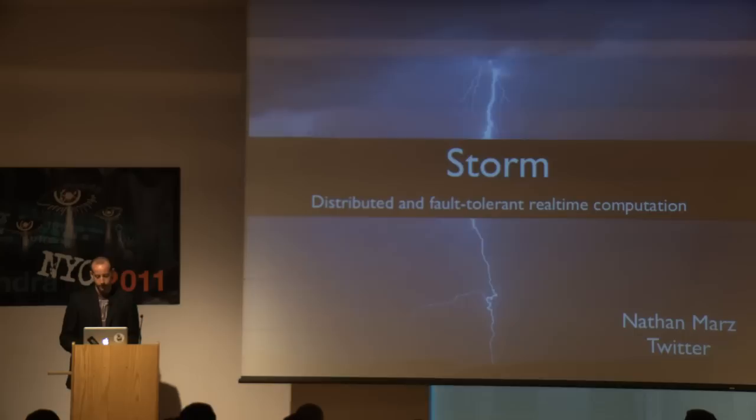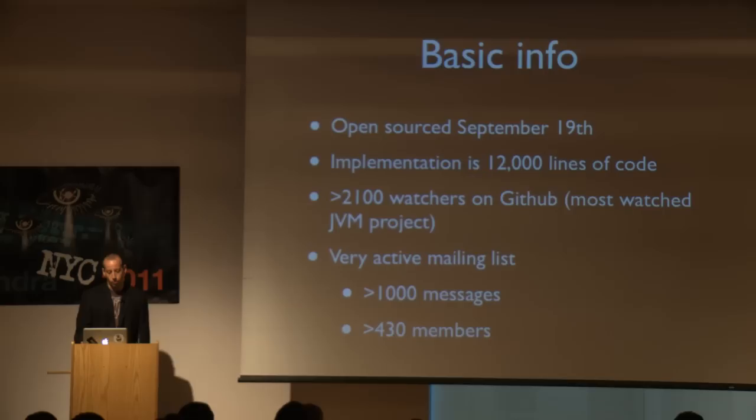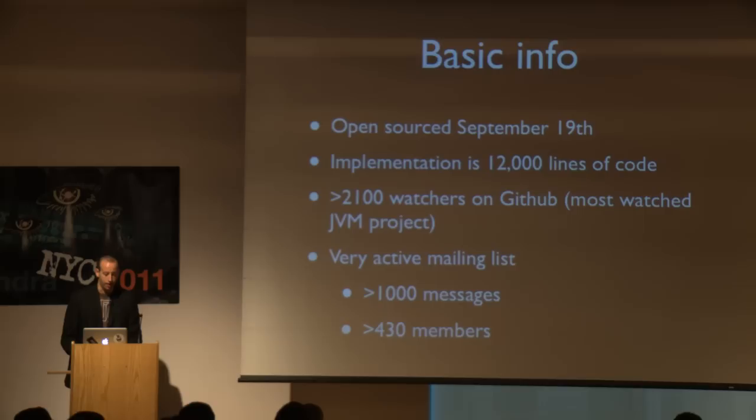Some basic information about the project: it was open sourced on September 19th. The implementation of Storm is only 12,000 lines of code — about half of that is Java and half is Clojure. So it's a really tiny implementation, but it packs quite a punch. Storm has more than 2,100 watchers on GitHub, which makes it by far the most watched Java, Scala, or Clojure project. It has a very active mailing list and community, and there's also been a ton of projects built on top of Storm that have been open sourced.